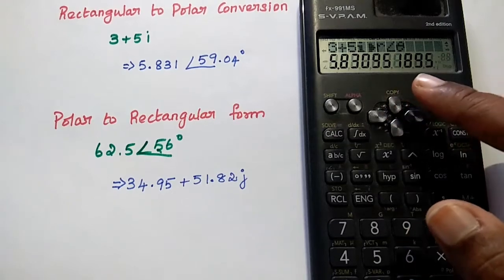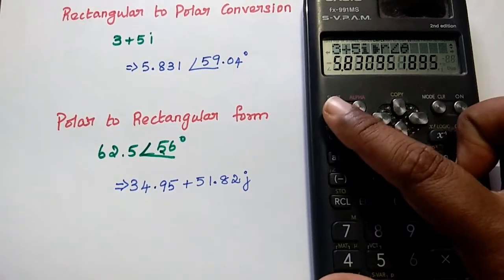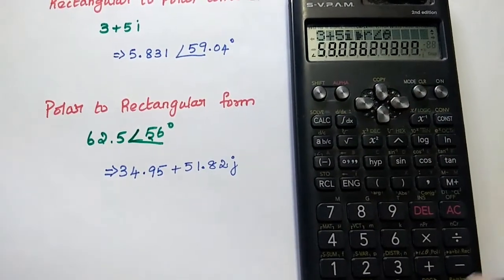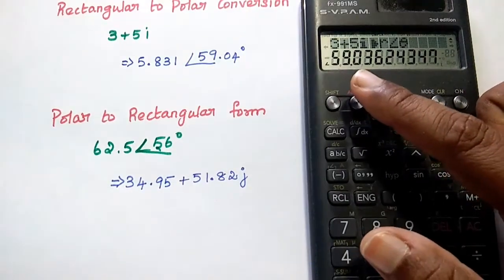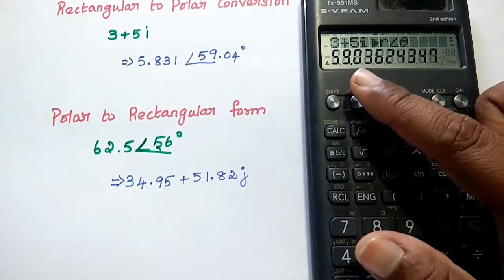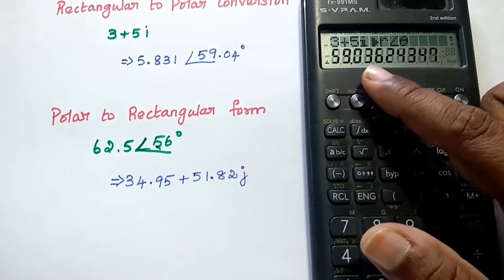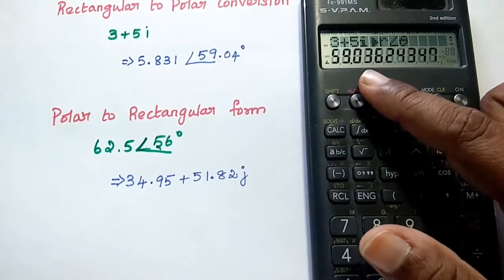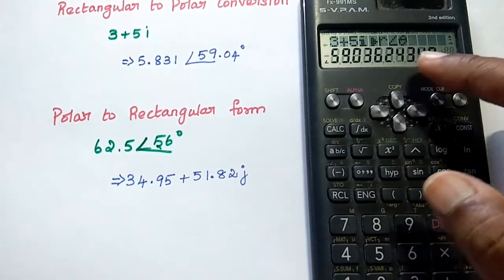Next we want to get the angle. For that, again, we can press this SHIFT and equal to sign. We can see the angle in the calculator with the value 59.036. It can be represented as 59.04 degree.